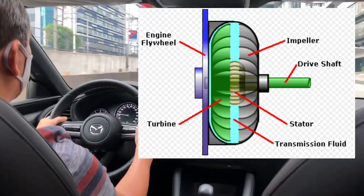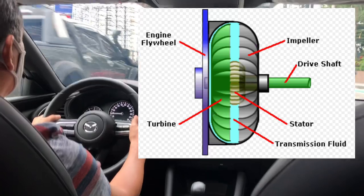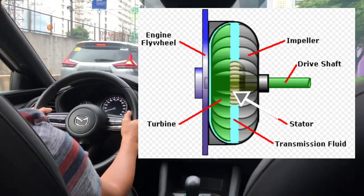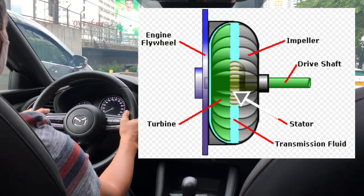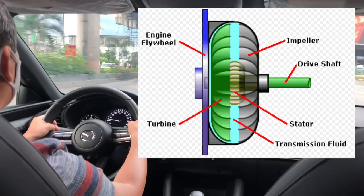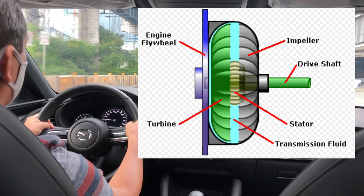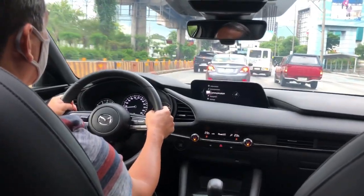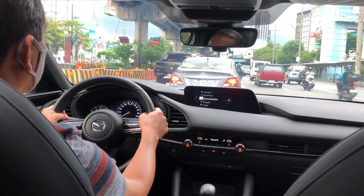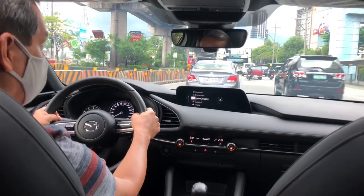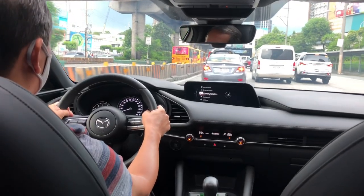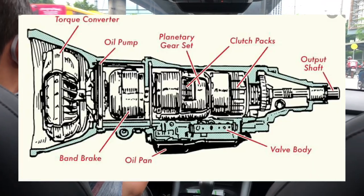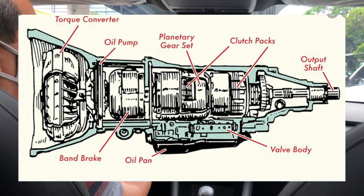As the engine turns, the blades of the impeller move the fluid, which in turn causes the turbine to turn. The fluid moves in a closed loop. There's a third component called the stator, which sits between the impeller and turbine and helps direct fluid movement. As you push the throttle, the fluid moves the turbine faster and sends more power to the transmission. As you slow down, the turbine slows down too, and the engine idles without stalling. The fluid controls the transmission's reaction automatically, matching the gear ratio to the car's speed.